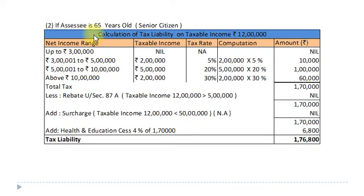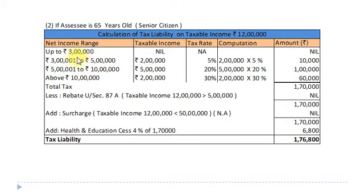Calculation of tax liability on taxable income of Rs. 12 lakh if the assessee is 65 years old. Here our assessee is a senior citizen. For a senior citizen, the basic exemption limit is Rs. 3 lakh – no tax up to Rs. 3 lakh. Second stage: Rs. 3,00,001 to Rs. 5 lakh; taxable income Rs. 2 lakh at 5% = Rs. 10,000.